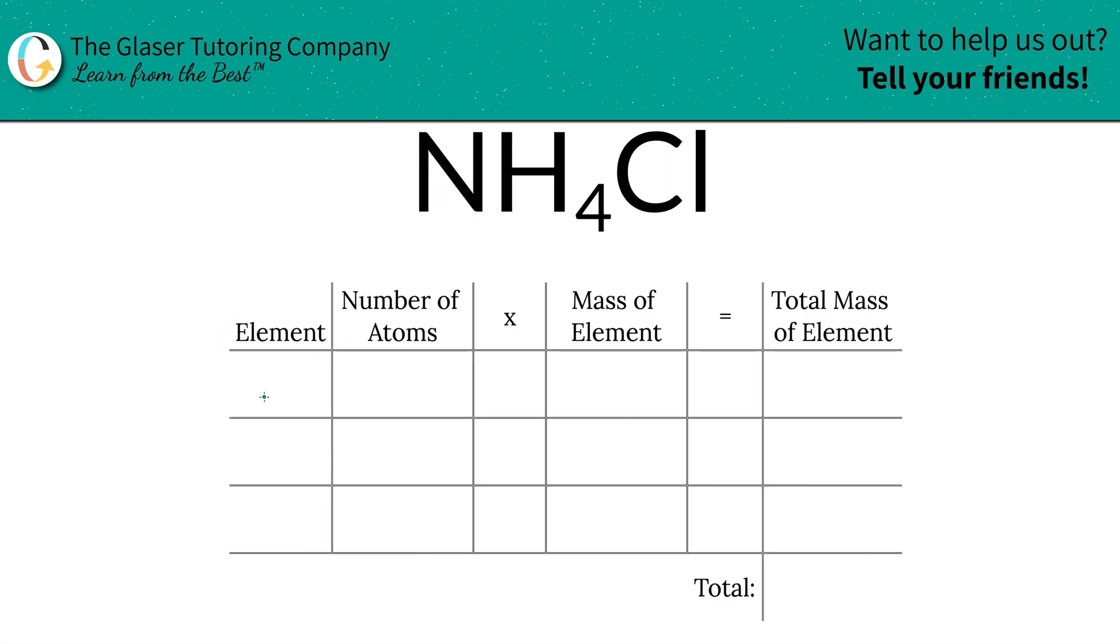So the first step is we're going to write down the elements we see: nitrogen, hydrogen, and chlorine. Then we're going to write down the number of atoms of each and that's where the subscripts come into play. If you don't see a subscript at the bottom of the element, just simply write in a one. So we've got one nitrogen, four hydrogens, and one chlorine.